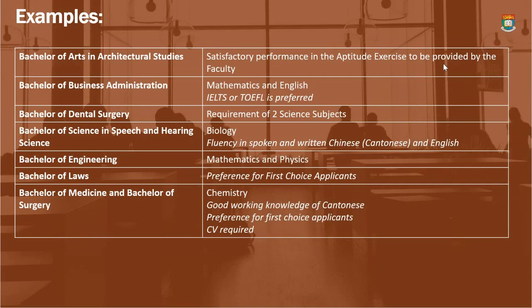Refer to the website for information to guide your assessment. Programs like Bachelor of Laws and Bachelor of Medicine and Bachelor of Surgery will require applicants to list them as a first choice. These are very competitive programs and they want students to be very firm in saying this is their first choice. This will be a guide for you on how to prepare your application accordingly.